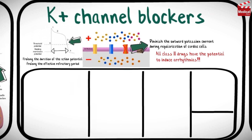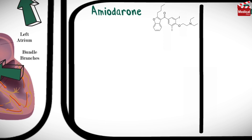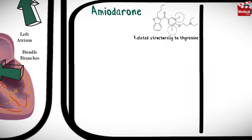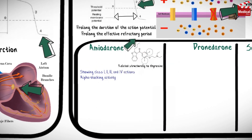There are five drugs to briefly discuss: amiodarone, dronedarone, sotalol, dofetilide, and ibutilide. Amiodarone contains iodine and is structurally related to thyroxine. It has complex effects, showing class 1, 2, 3, and 4 actions, as well as alpha-blocking activity. Its dominant effect is prolongation of the action potential duration and the refractory period by blocking potassium channels.